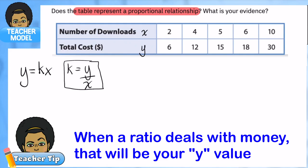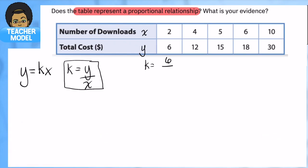Let's see what this looks like for the first one. k is equal to 6 divided by 2. Simplify that and what would you get? 3. That's k in the first one. Let's see if it's constant throughout.